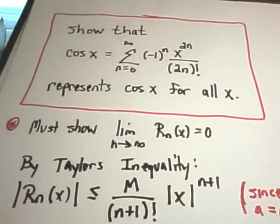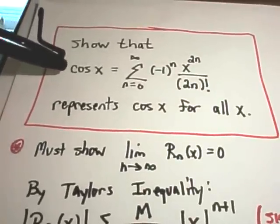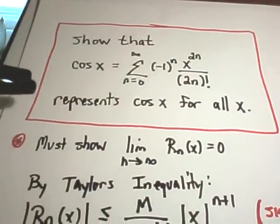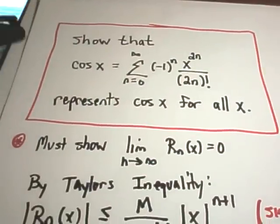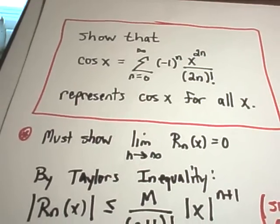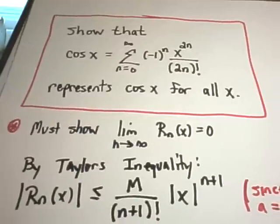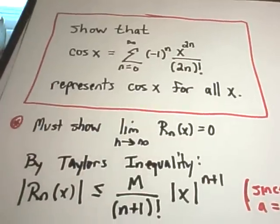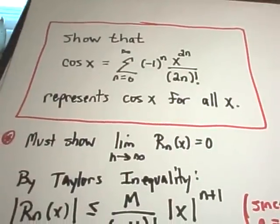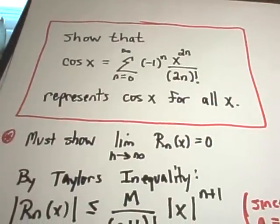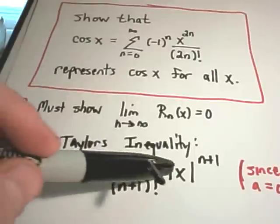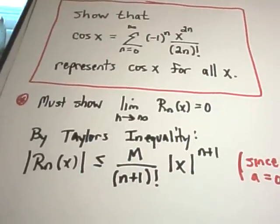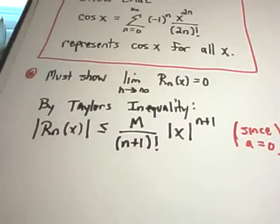For the first example, let's show that cosine of x — here's the Taylor series representation for cosine of x — is actually valid for all values of x. The idea is we have to show that the limit as n goes to infinity of the remainder equals zero. This is actually a Maclaurin series, which means we have an a value of zero. So in Taylor's Inequality, I'm just replacing x minus a with x minus zero, and now we have to bound the generic remainder.